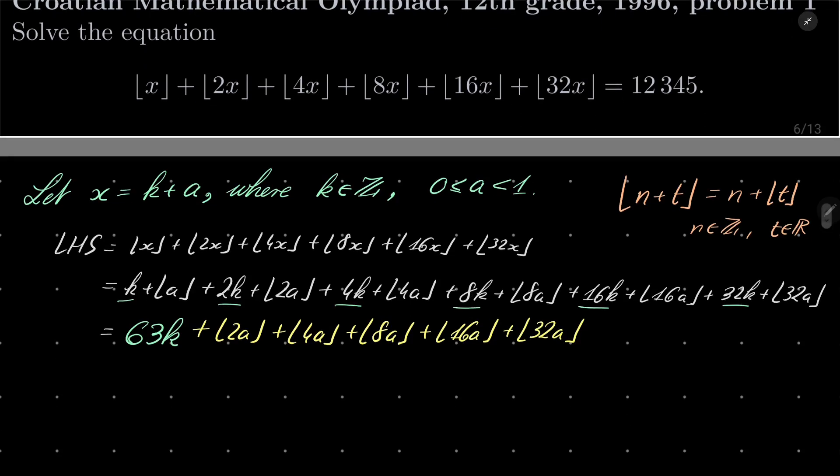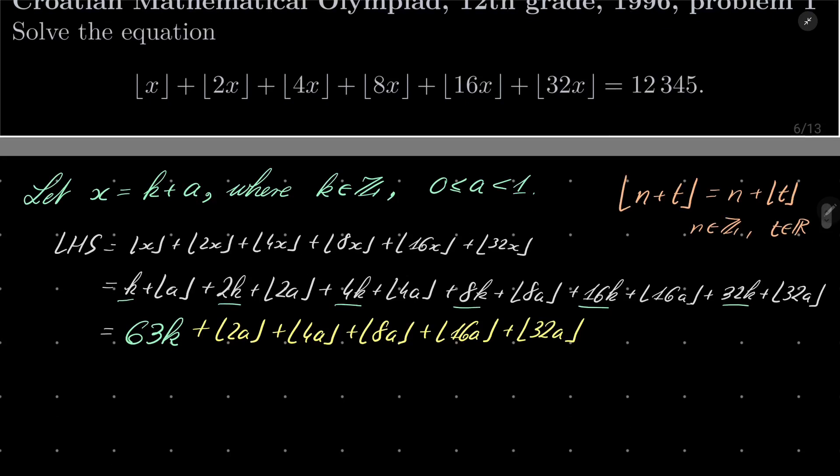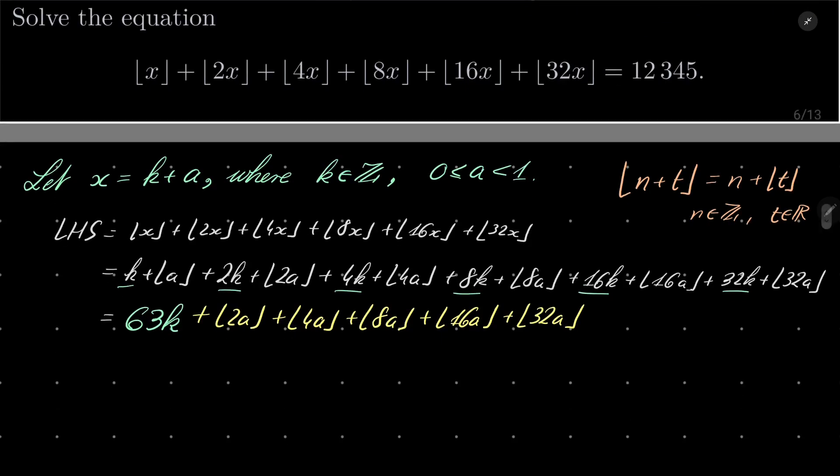Now let's do some estimations. Let's think about what integers can be these floors. Notice that a is between 0 and 1, so 2a is between 0 and 2. So definitely this floor is less than or equal 1 and greater than or equal 0.